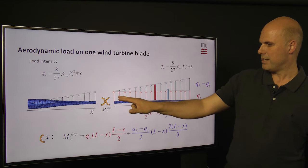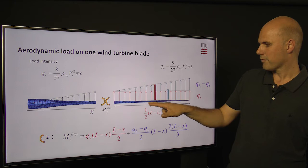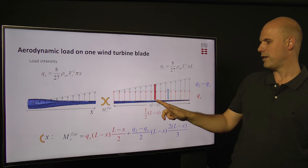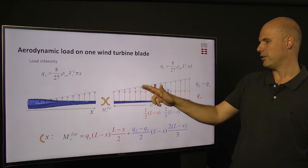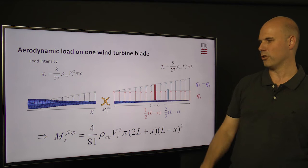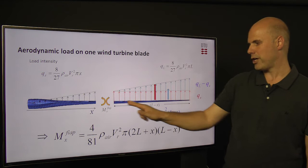The moment is found by finding the total value of the load given by the intensity multiplied by the length of the section, and then the point where this load is acting. For the uniformly distributed load, the maximum moment works at the midpoint, while for the linear distribution, it works at the two-thirds point along the blade. This equation can be derived in a simplified form by substituting in the values for the load intensity, giving the moment at an arbitrary point in the blade.